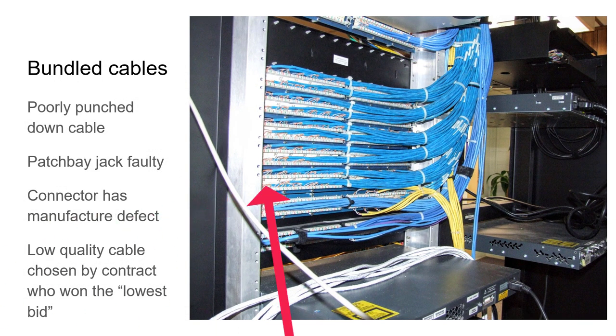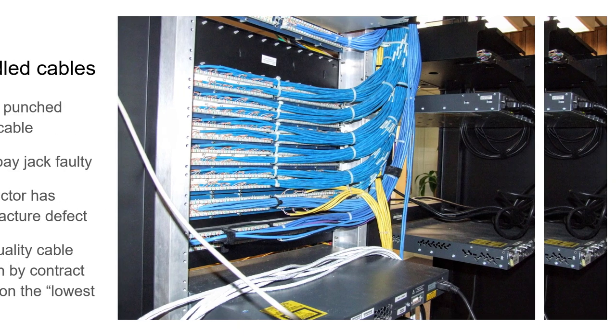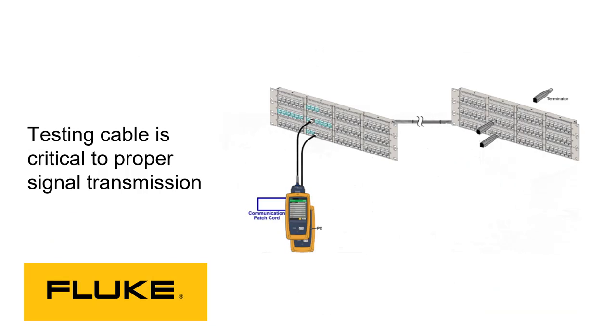Here you see bundled cables coming down, of CAT5, and they're punched down into a patch bay. These bring their own trouble. Poorly punched down cable. A patch bay jack that's faulty. A connector has a manufacturer defect. Or, worse, low-quality cable chosen by the contractor who won the lowest bid. And it gets worse. As we bundle all our cables together, we can start getting alien crosstalk, where the signals in one cable begin to bleed into other cables in the bundle.